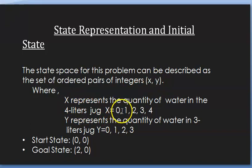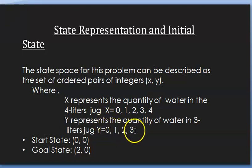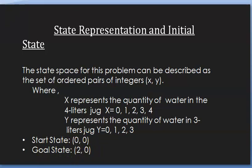x can take any value of 0, 1, 2, 3, or 4 because it is a 4 liter jug — it can be empty, identified by 0, or full, identified by 4. Similarly, y is the 3 liter jug represented as 0 for empty and 3 for full. The start state is (0, 0), meaning both jugs are empty, and the goal state is (2, 0), which means there is 2 liters of water in the 4 liter jug.